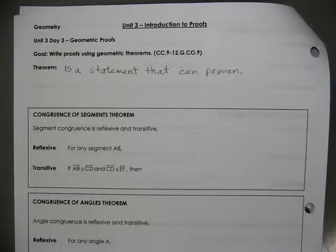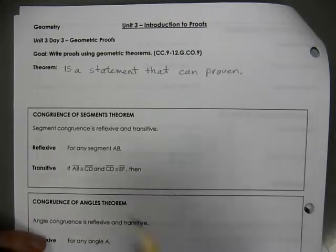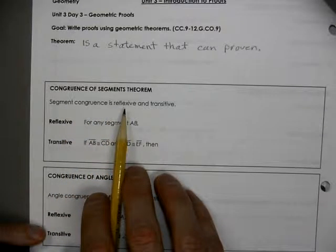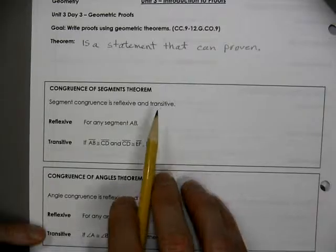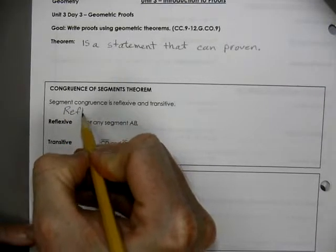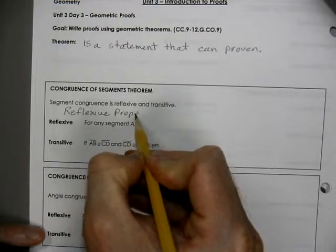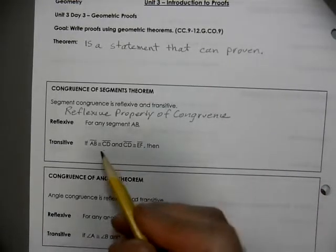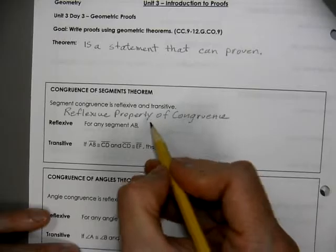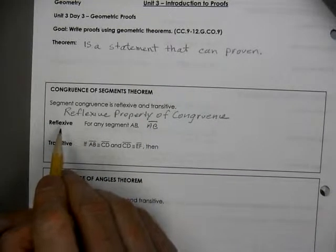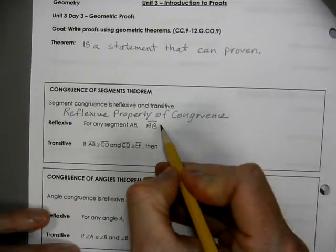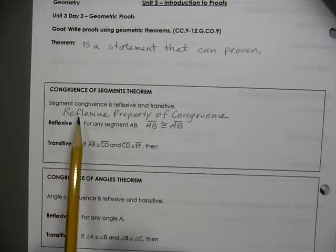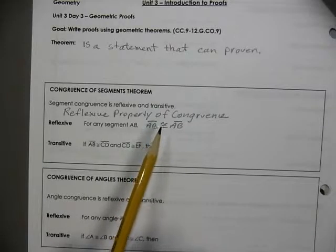So when we do proofs, we're working on showing that the theorem is true. Here we have the congruent statement theorem. Segment congruence is reflexive and transitive. This is the reflexive property of congruence. For any segment AB, reflexive means that it is congruent to itself. Sounds a little silly, but reflexive property of congruence allows us to state that something is congruent to itself.